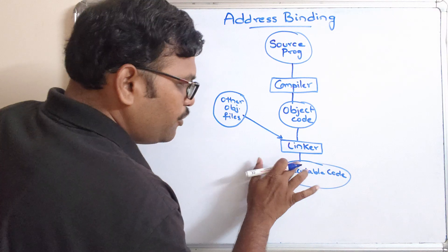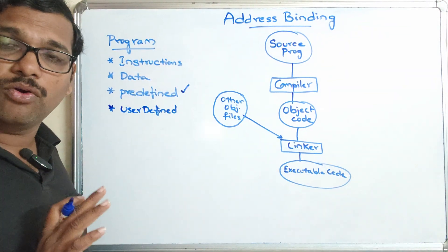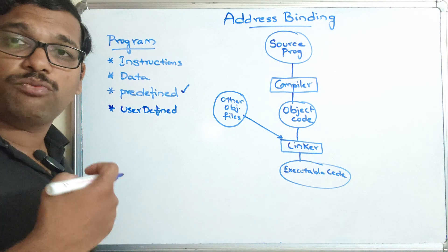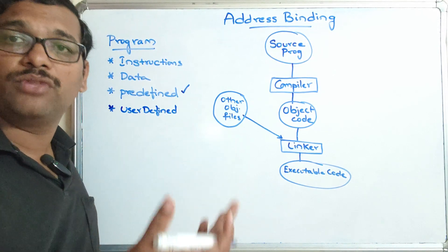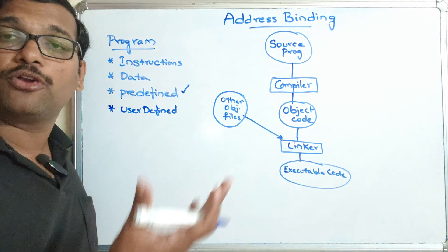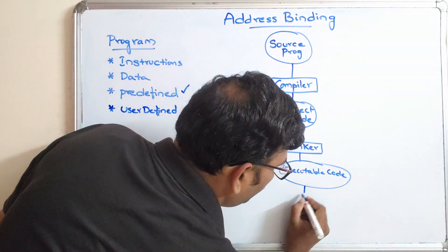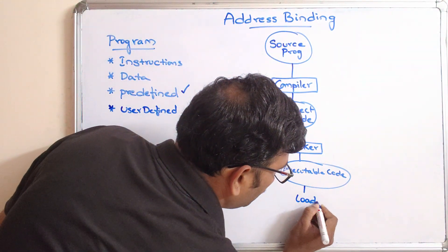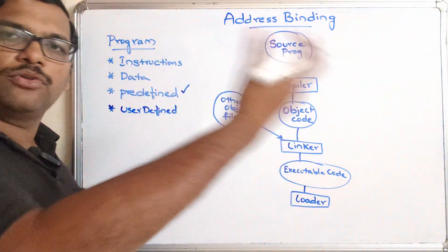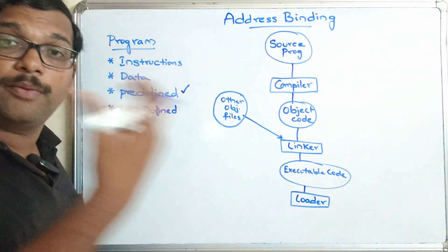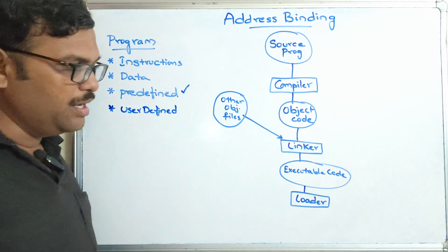From the executable code, which is ready to execute, it is given to the processor. This executable code is also given to the loader. The loader loads the program into the main memory, because the CPU will execute the code only from main memory.